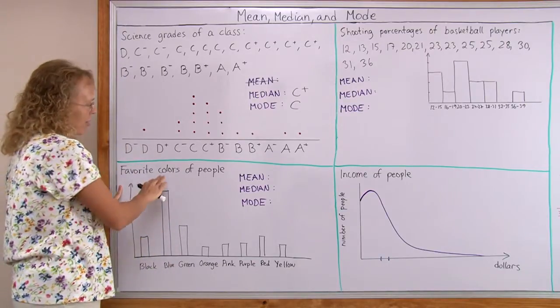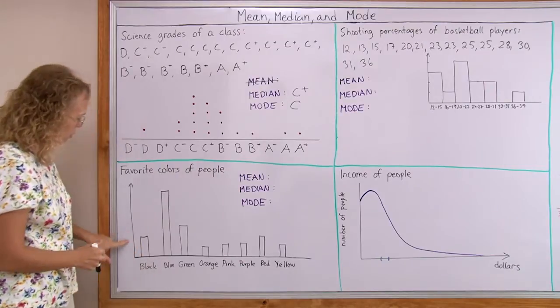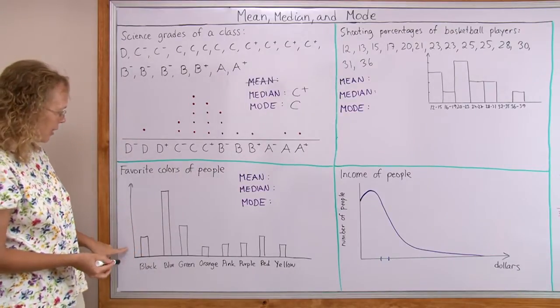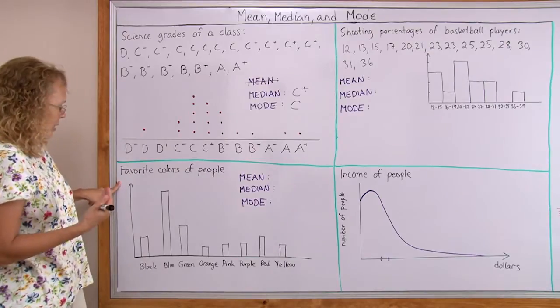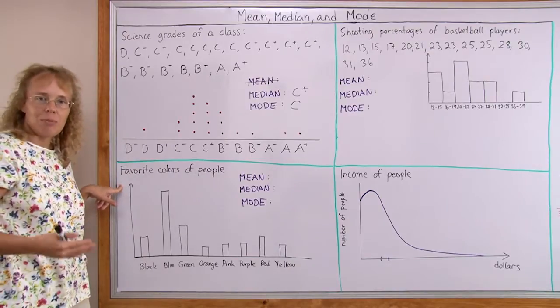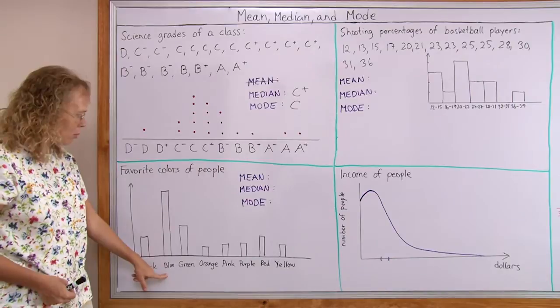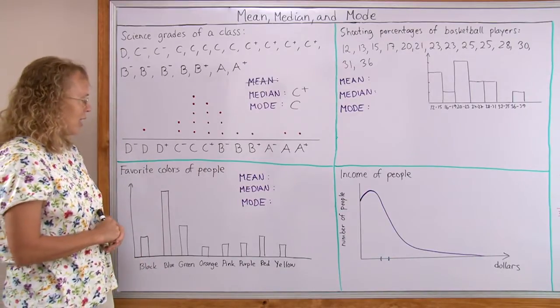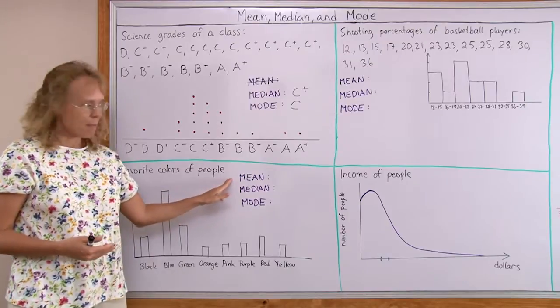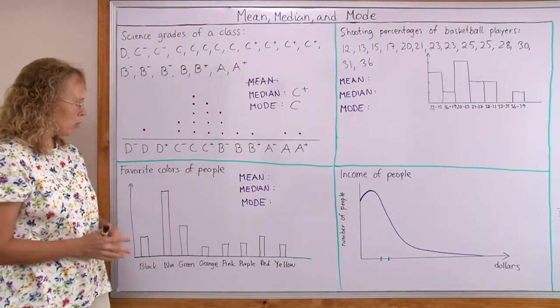In this example, we have favorite colors of people. And this would be the number of people. So maybe let's say 200 people said that black was their favorite color, 770 people said that blue was their favorite color and so on. Now, can we calculate the mean? The median? The mode?